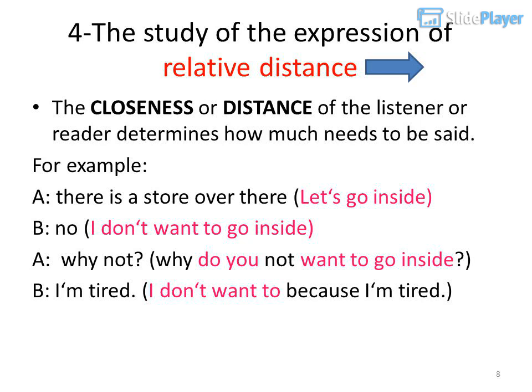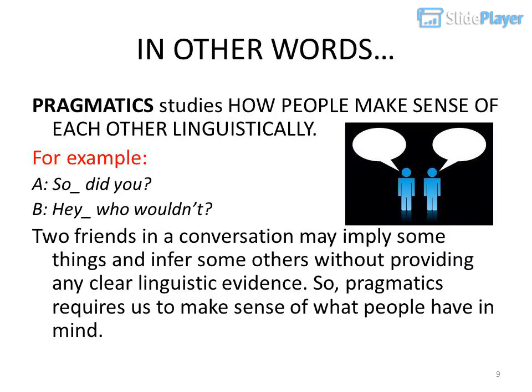(5) The study of the expression of relative distance. The closeness or distance of the listener or reader determines how much needs to be said. For example: A: 'There is a store over there, let's go inside.' B: 'No, I don't want to go inside.' A: 'Why not?' B: 'I'm tired' — meaning: I don't want to because I'm tired.